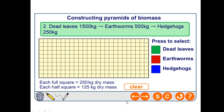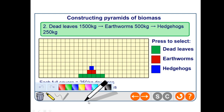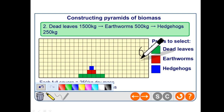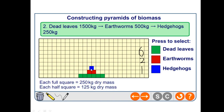Here is another example to try — pause the video and have a go. The answers: dead leaves 1500 kg (6 squares), earthworms 500 kg (2 squares), and hedgehogs 250 kg (1 square). The hedgehogs are drawn as two half-squares either side to make it look symmetrical — 125 + 125 = 250, equivalent to one full square.